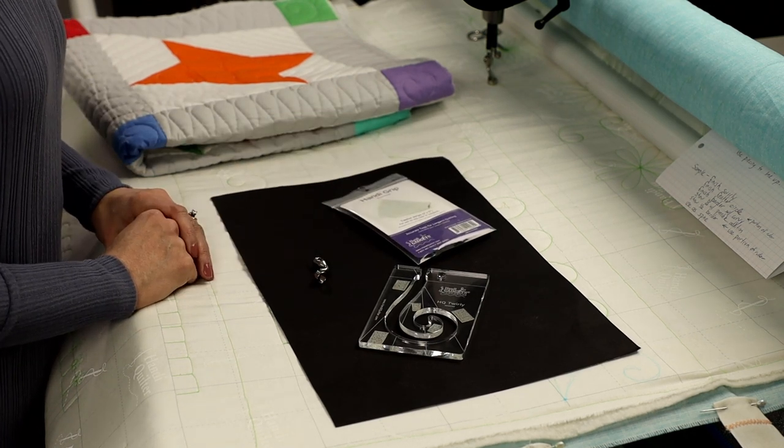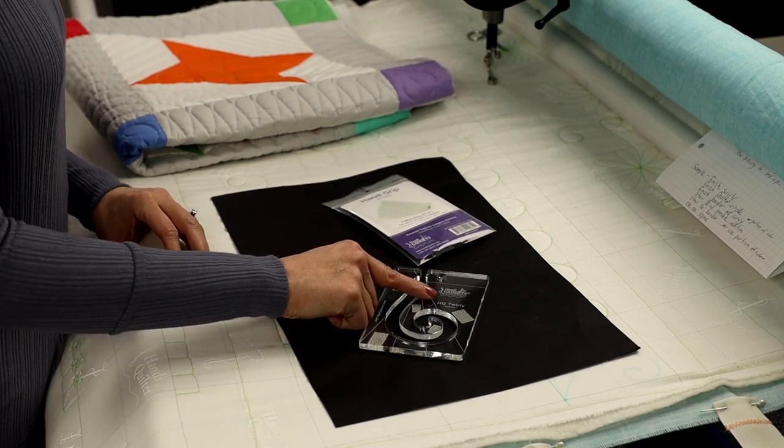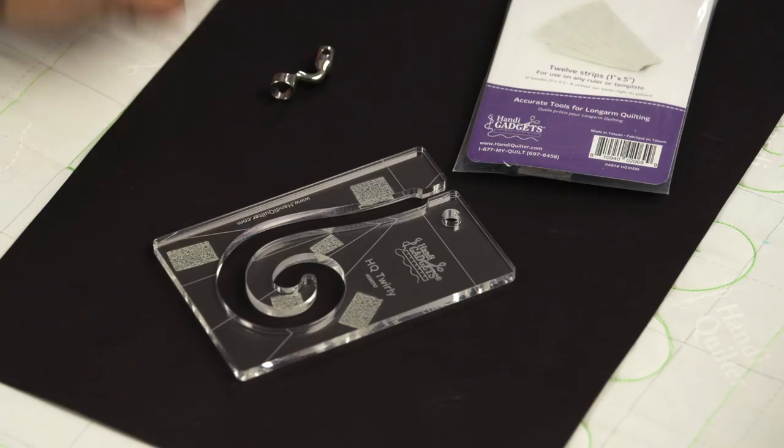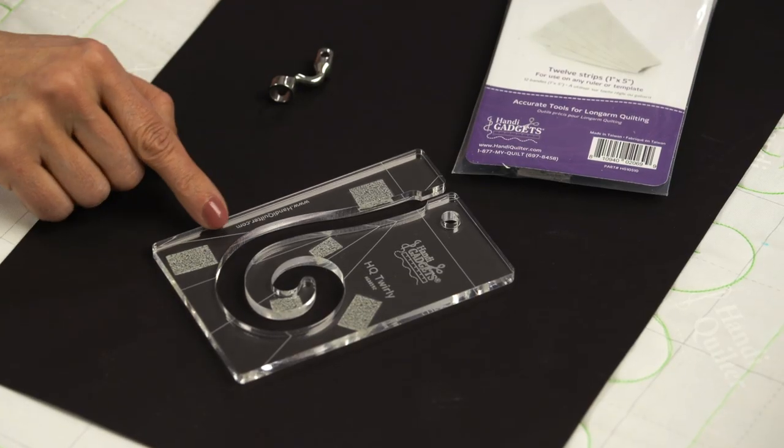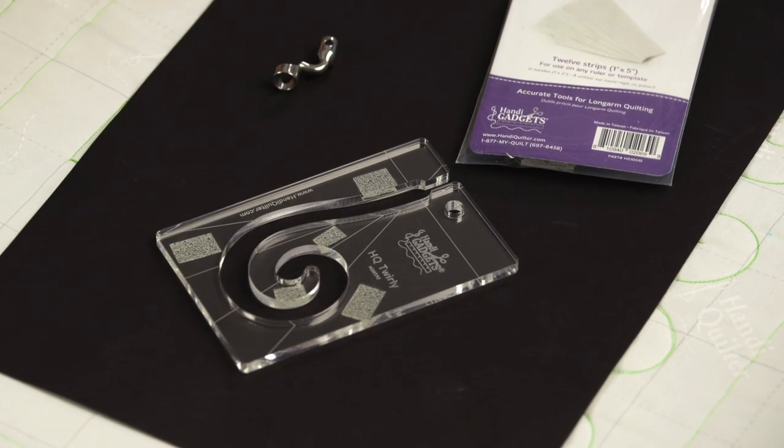Make sure you also have a ruler base. Make sure that you have the ruler facing up the correct direction so that the etching lines will be better visible as you're doing your quilting. To double check that, just make sure you can read the name on it.